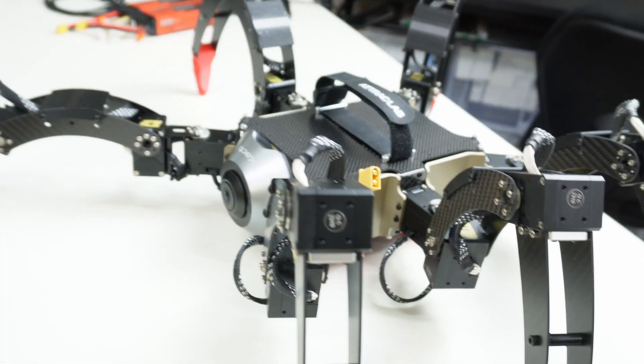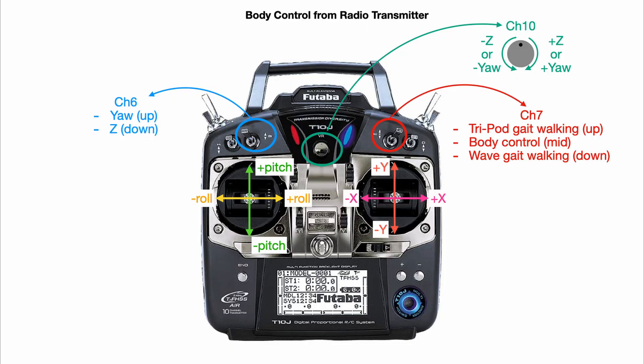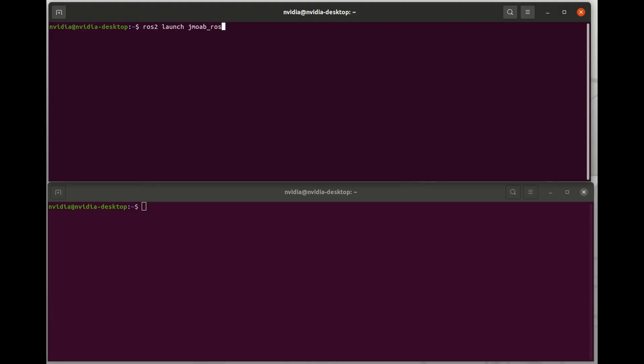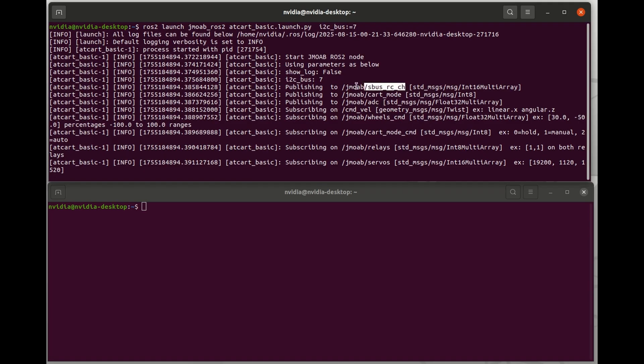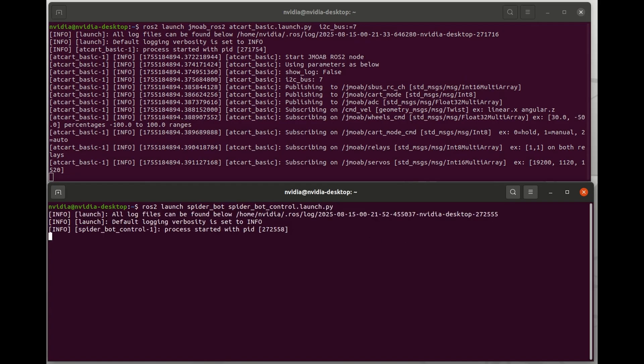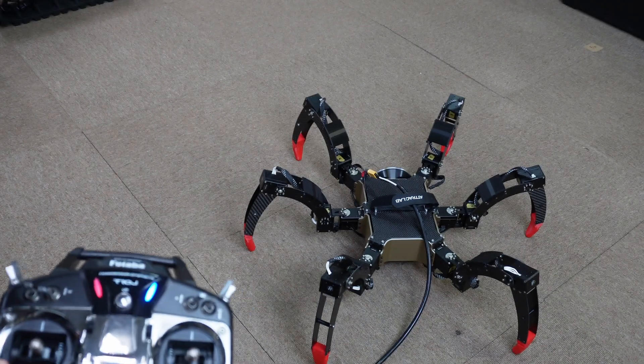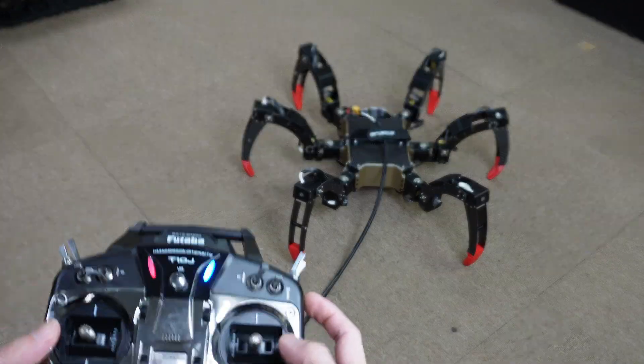So I think it's ready to do some tests on real robot. I'm going to use radio transmitter with this following setup. I can change the movement mode on channel 7 to tripod gate walking, body control, or wave gate walking. On the first terminal, I run ROS2 launch jmoab ROS2_ATcard_basic.launch.py with i2c bus of 7. The only one topic we need is jmoab s bus RC channel. On second terminal, I run ROS2 launch spiderbot spiderbot control.launch.py. Then the robot will wake up and start initializing. We can make it move as tripod gate.